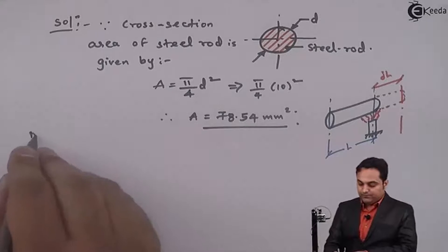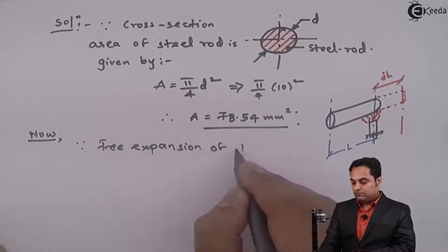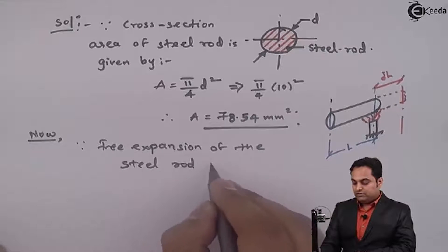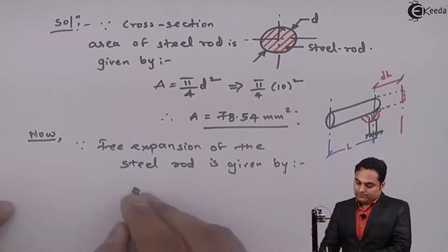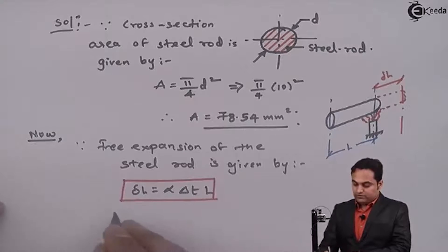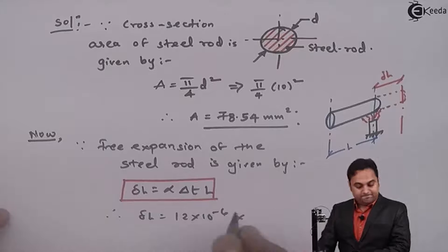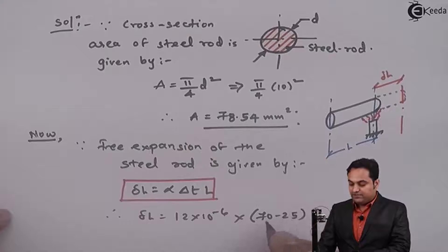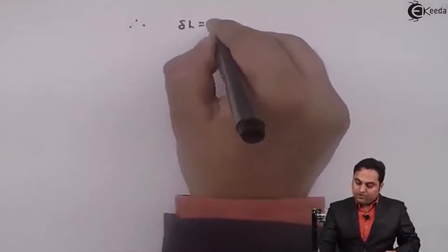The free expansion of the steel rod is given by: delta L = α × delta T × L. Therefore, delta L = 12 × 10⁻⁶ × (70 − 25) × 2000 mm. The deflection comes out to be 1.08 mm.